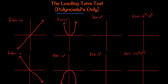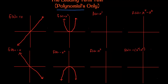x³ is going to start down in quadrant three, cross through the origin, and continue on to quadrant one. Negative x³ is going to rotate this about the x-axis — we still cross through the origin, but now we continue out to quadrant four.